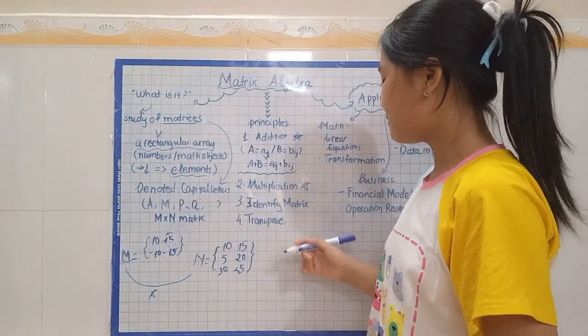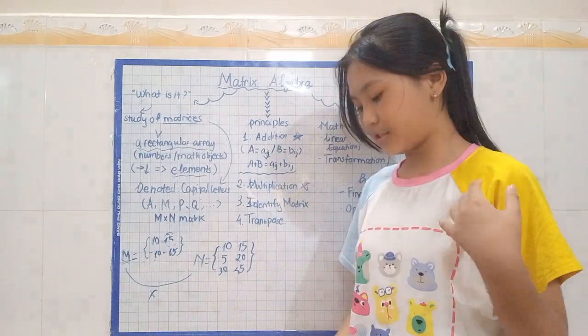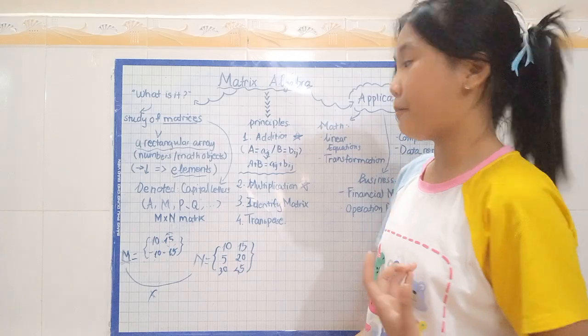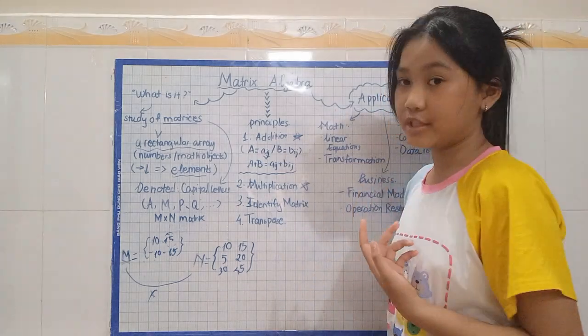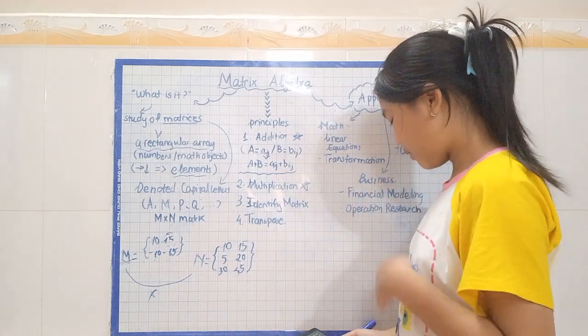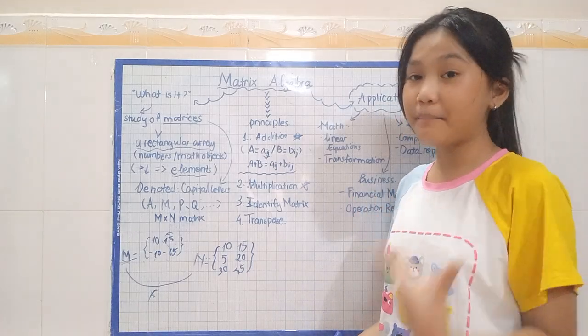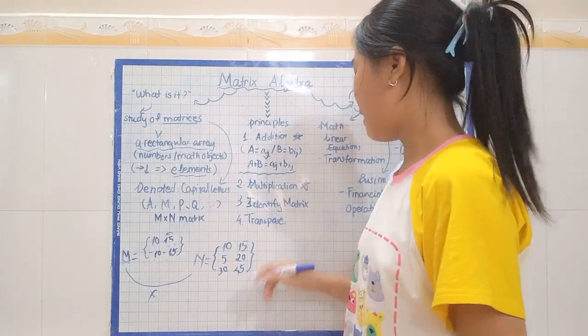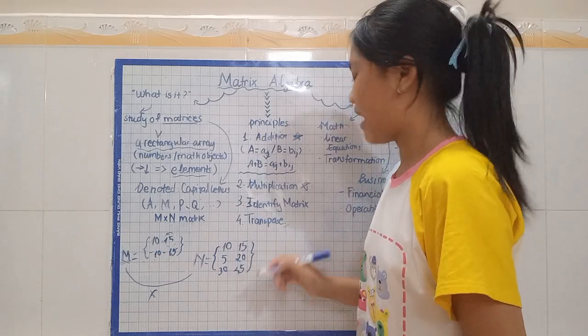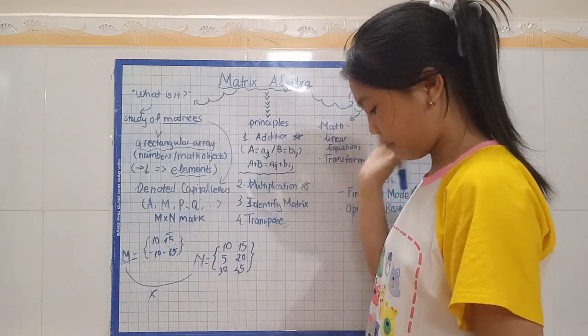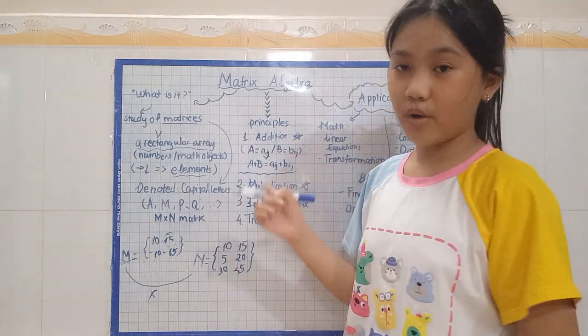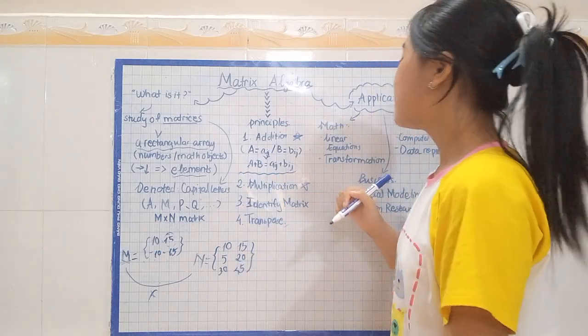Next, we also have identity matrix. This is actually a really important matrix. It's like you identify a square matrix of what it is. We also have transpose of matrix, which is formed by swapping its rows and columns out.